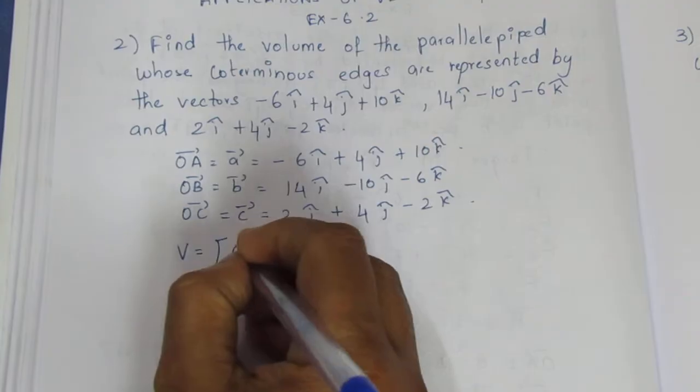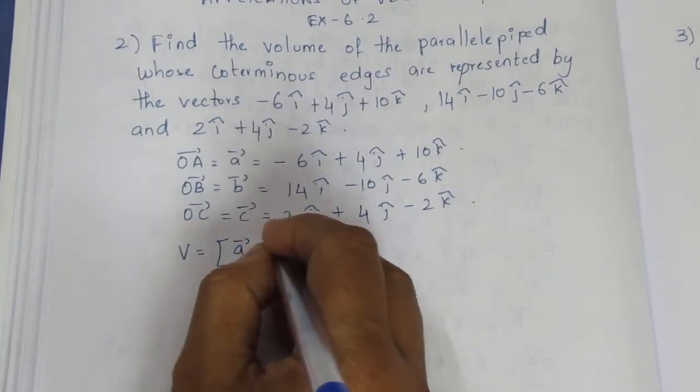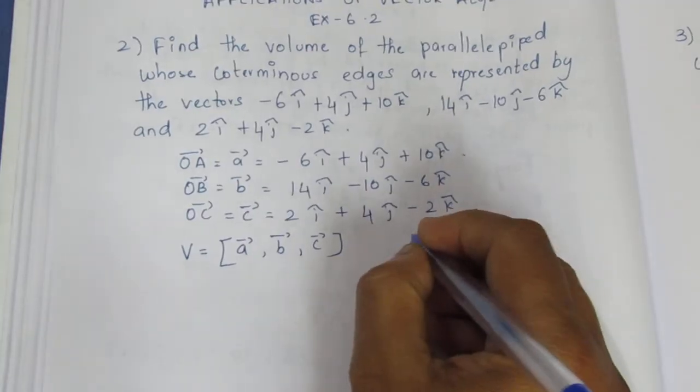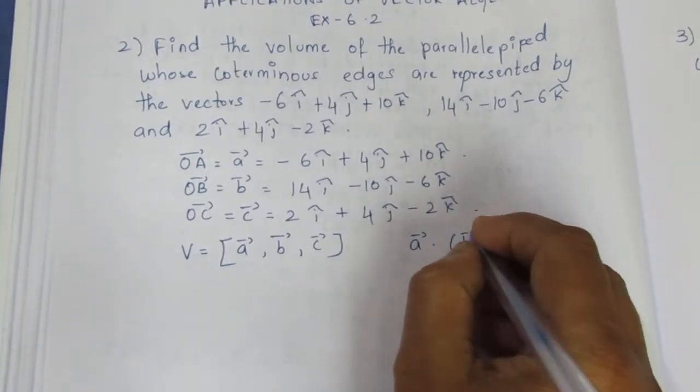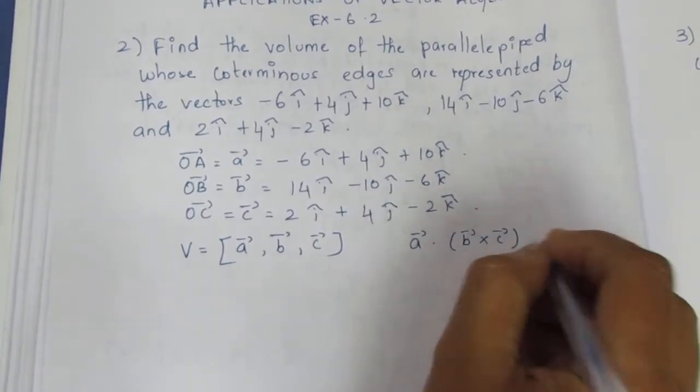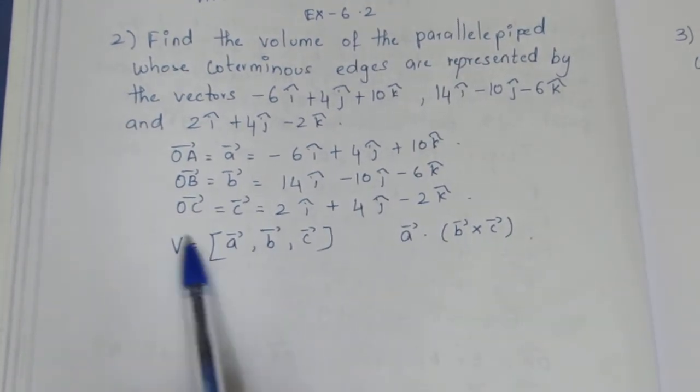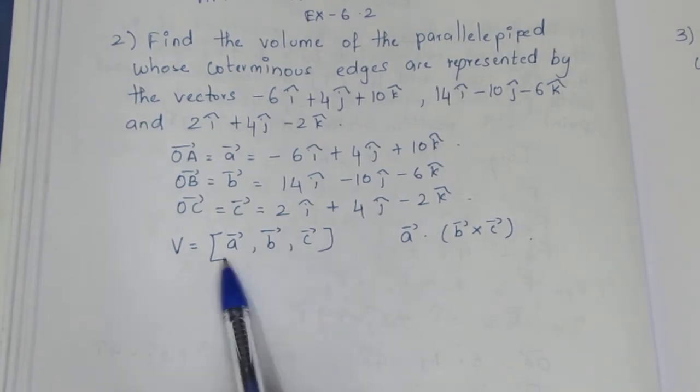We have the scalar triple product of A vector, B vector, C vector. This is actually A vector dot B vector cross C vector. This is the meaning, so this is the volume of a parallelepiped.